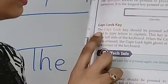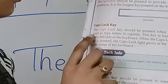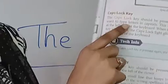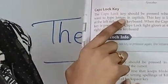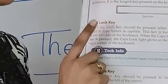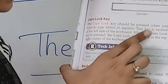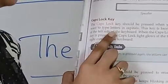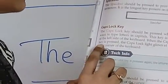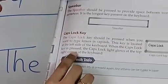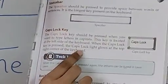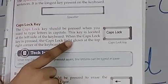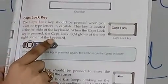Next is the caps lock key. The caps lock key should be pressed when you want to type letters in capital. This key is located at the left side of the keyboard. When the caps lock key is pressed, the caps lock light glows at the top right corner of the keyboard.